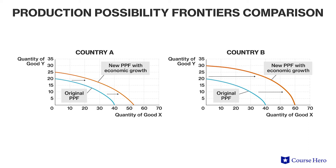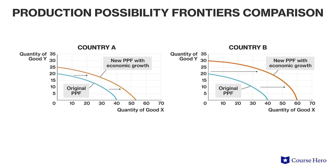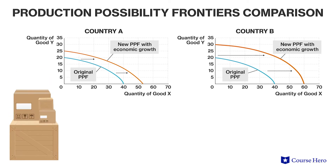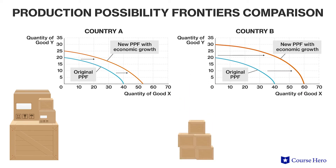It's possible that a PPF can shift outward, where the potential output of both goods increases, or it could have a pivot shift, where the maximum output of only a single good increases, but the economy could make more of both items than before.